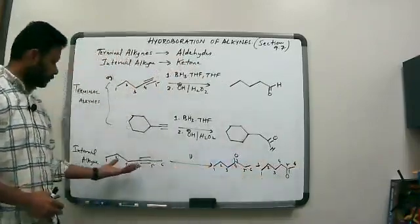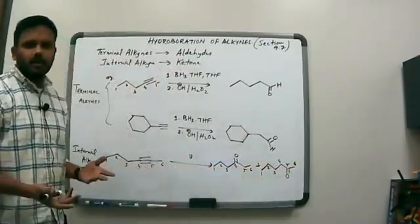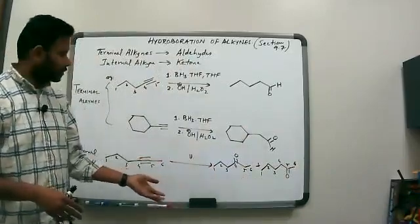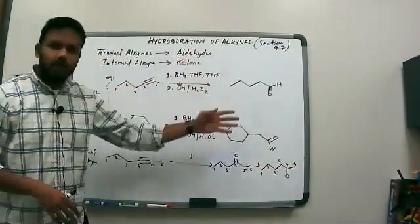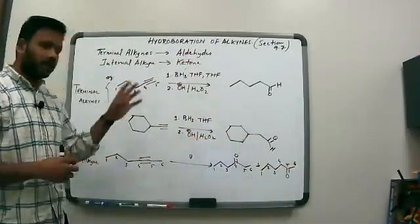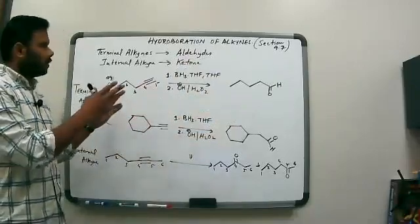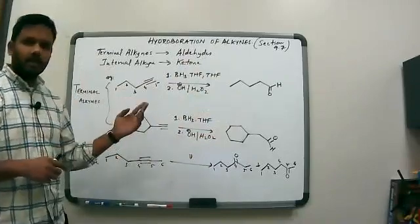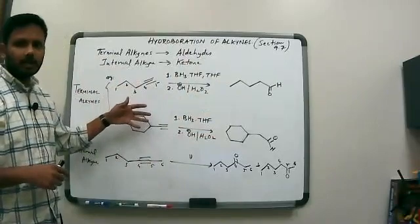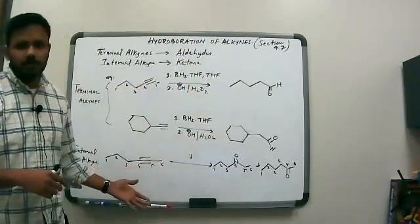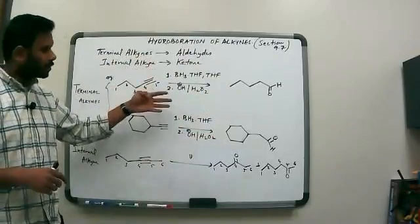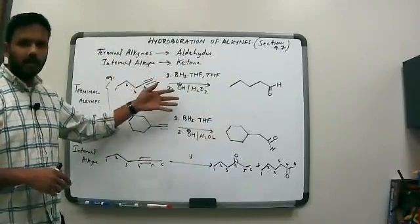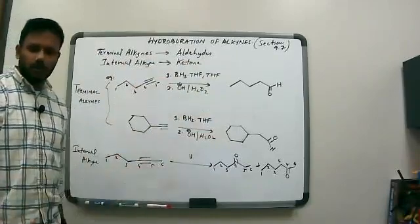You're going to get a mixture of ketones unless your alkyne is symmetrical. If it's not a symmetrical alkyne, you're going to get a mixture of products. When you have a terminal alkyne, you get aldehydes as products. That's where this reaction differs from the acid-catalyzed hydration of alkynes: in that case, we get a ketone product from a terminal alkyne, whereas here we get an aldehyde from terminal alkynes and ketones from internal alkynes.